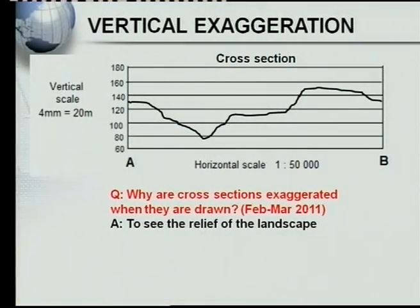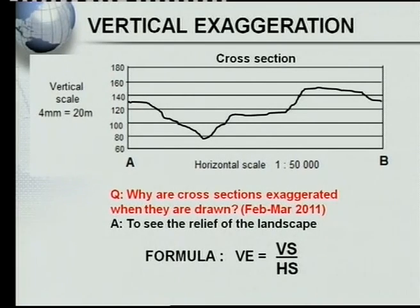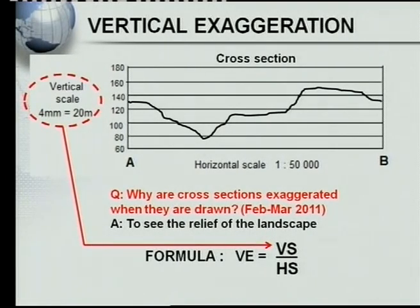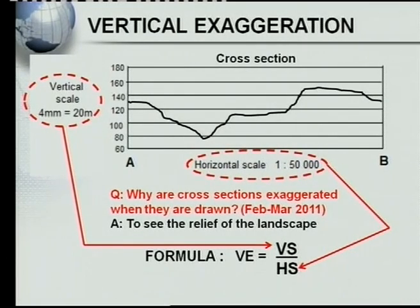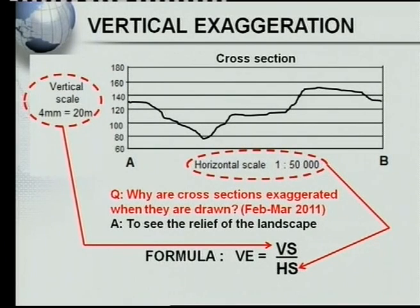Now we must do a calculation regarding vertical exaggeration. The most important thing is that you must know the formula. The formula is: vertical exaggeration equals the vertical scale divided by the horizontal scale. You've got to understand how to get to this formula and what to use when calculating vertical exaggeration. That is where the problem lies — many mistakes are made because people don't know which scales to use and how to place them in this division calculation.